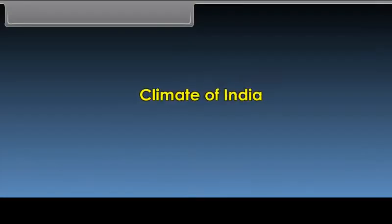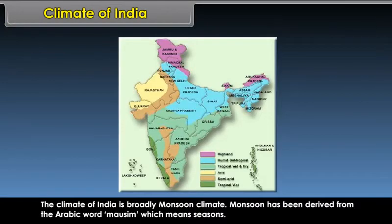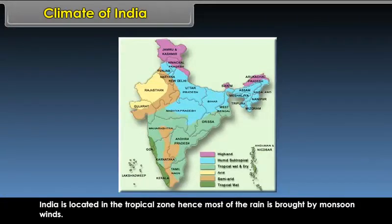The climate of India is broadly monsoon climate. Monsoon has been derived from the Arabic word mossim, which means seasons. India is located in the tropical zone. Hence, most of the rain is brought by monsoon winds.